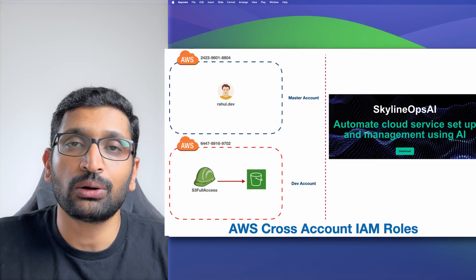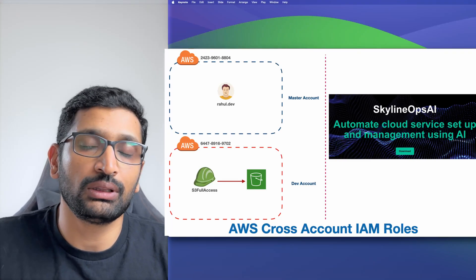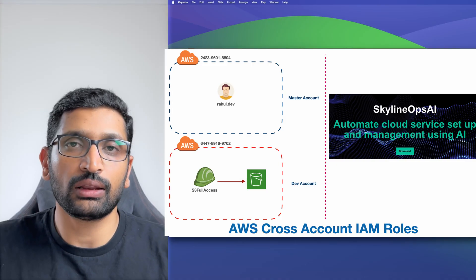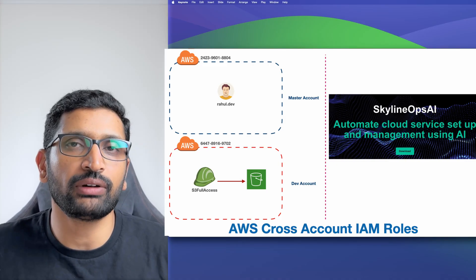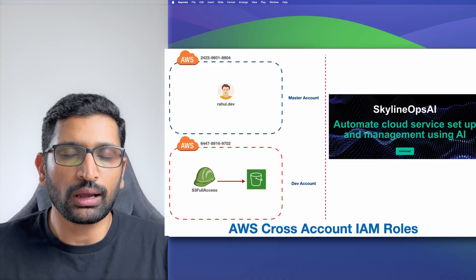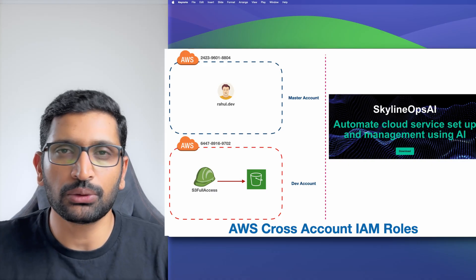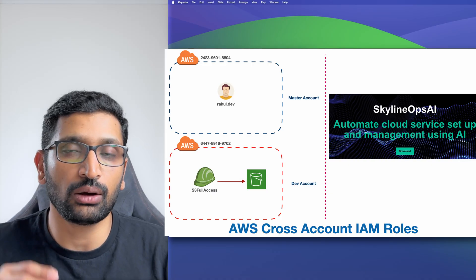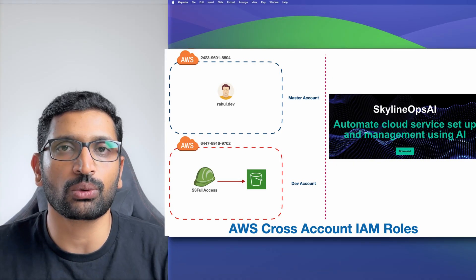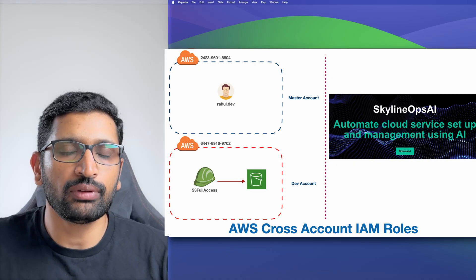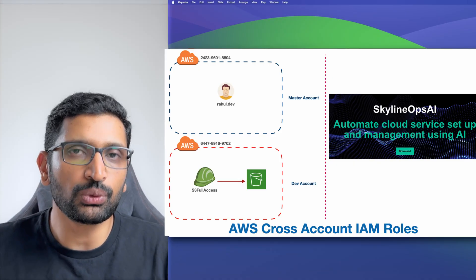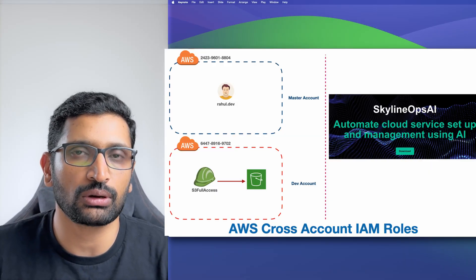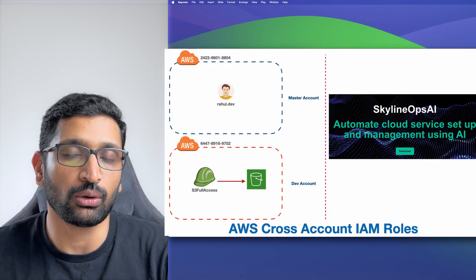Hello everyone, today we are going to talk about AWS cross-account roles and how we can leverage AI to simplify our automation. The session is divided into two parts: first, how AWS cross-account roles work, and second, how we can improve our automation around the AWS cross-account flow using the Skyline Ops AI.